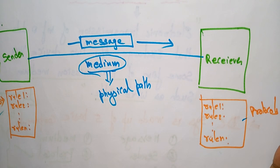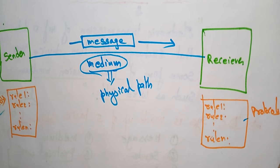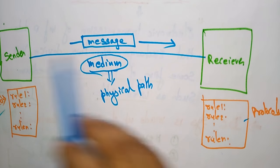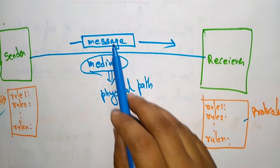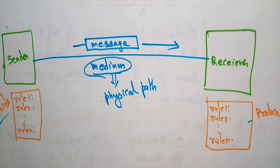So whenever you are asked about data communication, just explain: it is the transfer of data from one system to another system with the help of a physical medium. The five components present in data communication are the sender, receiver, message, medium, and set of protocols. Thank you.